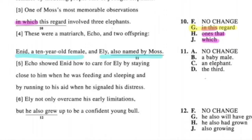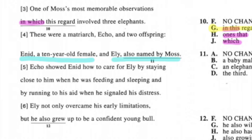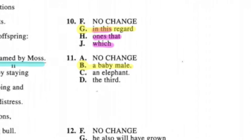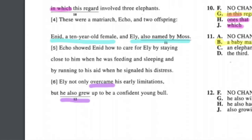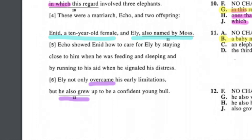Question eleven is a style rhetorical question. This one is rhetorical because all options are grammatically correct, but the sentence has already established a style and wants you to repeat it. The sentence says: 'these were a matriarch, Echo, and two offspring: Iniid, a 10-year-old female, and Eli, also named by Moss.' Iniid is described as 'a 10-year-old female,' so we should describe Eli the same way — giving gender and age. The best match is 'a baby male.' Right answer is B.